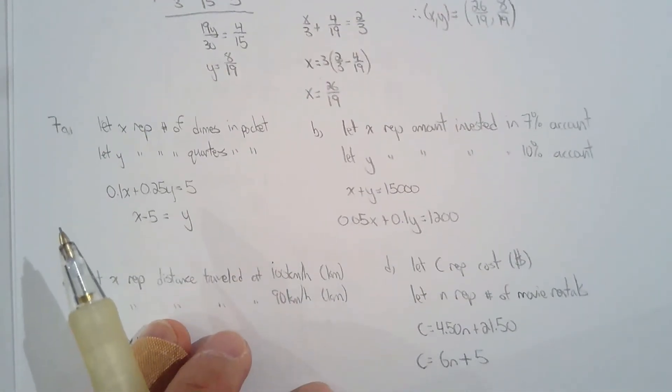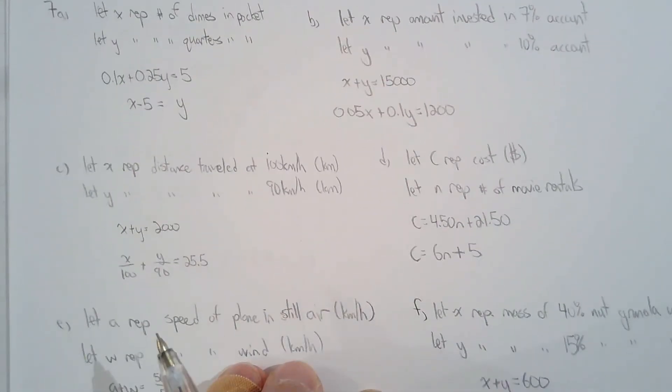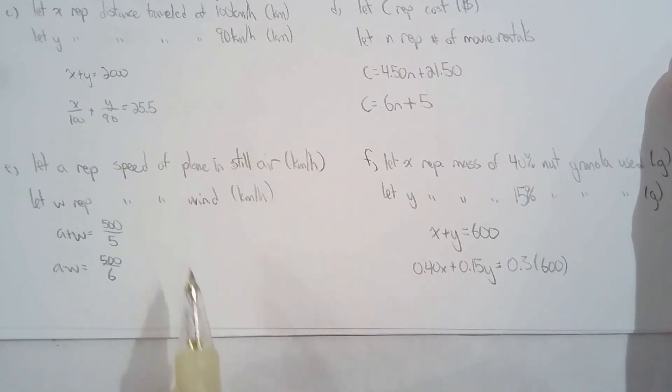And then for 7, you have some word problems. Just write the let statements and generate the correct system that will solve your word problem. I'm going to show you E and F here. So E is a rate problem. F is a mixture problem.